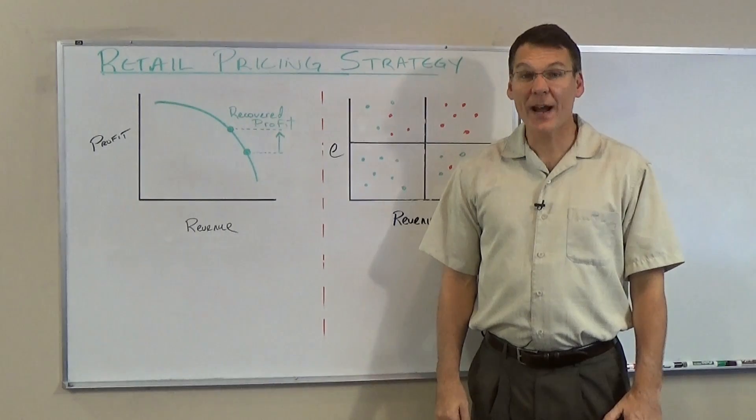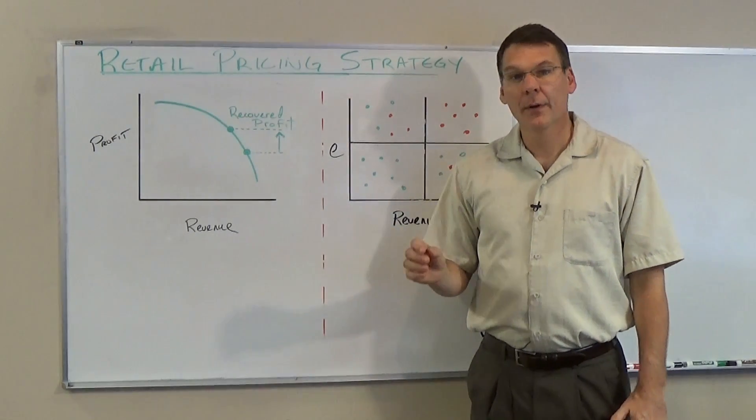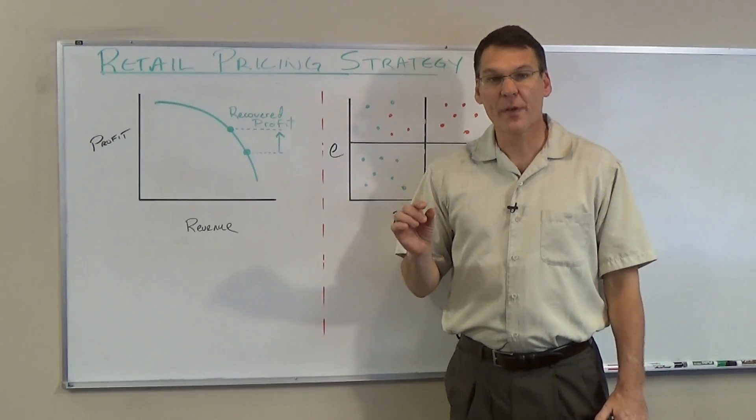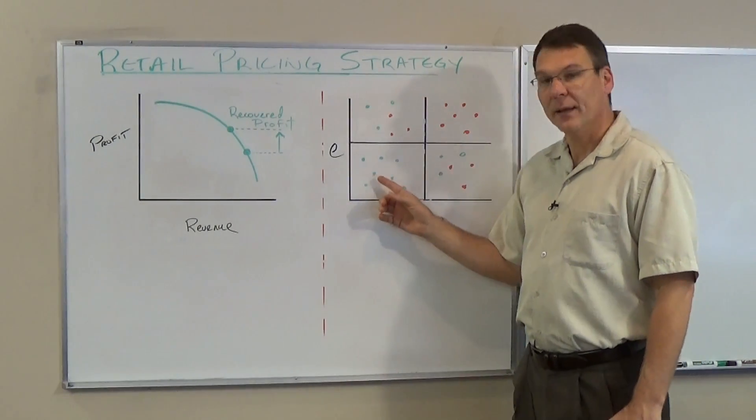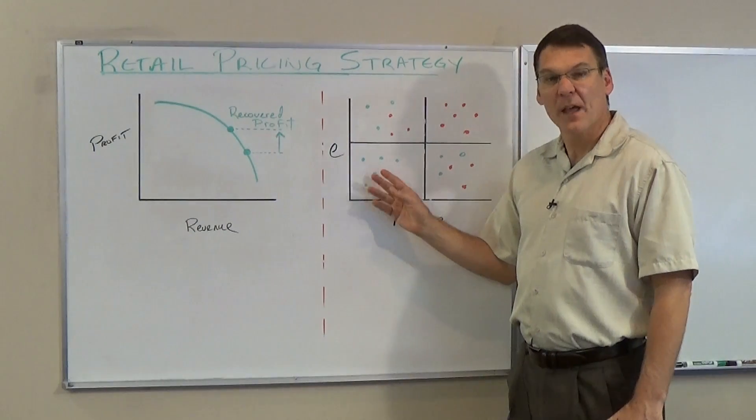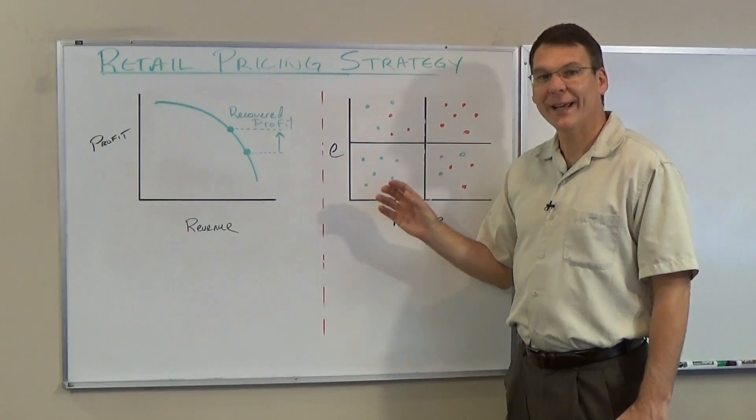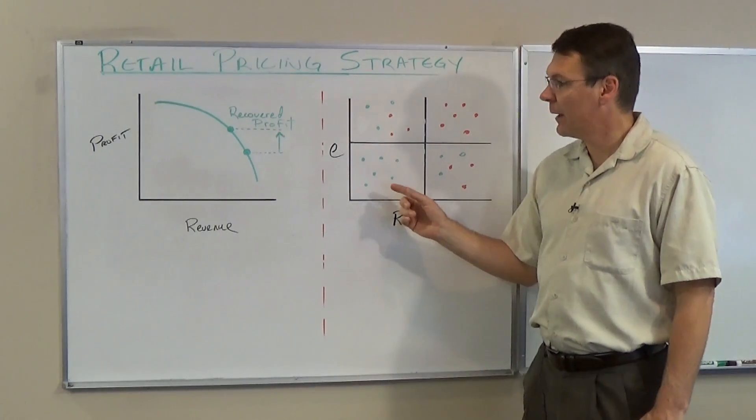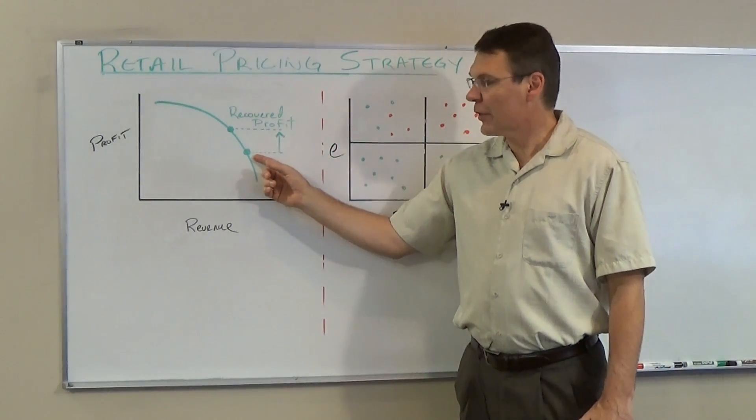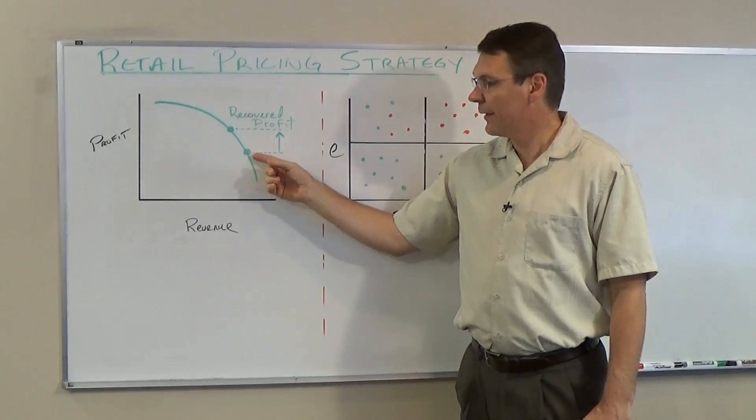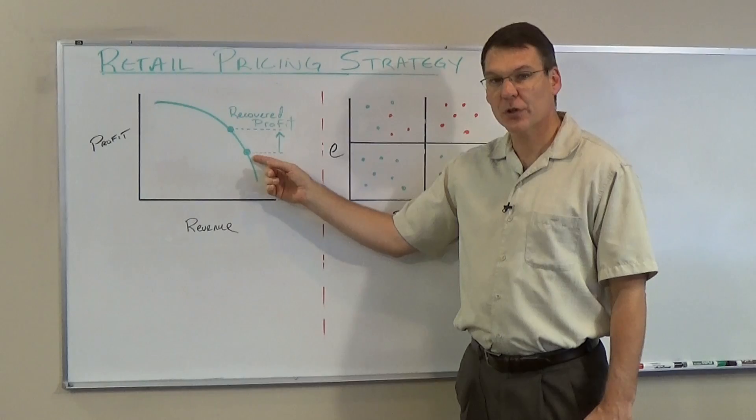The graph shown here represents the opportunity curve for the products in the green cluster. These are the products that are candidates for increasing price. The current prices for these products deliver the profit and revenue shown here.